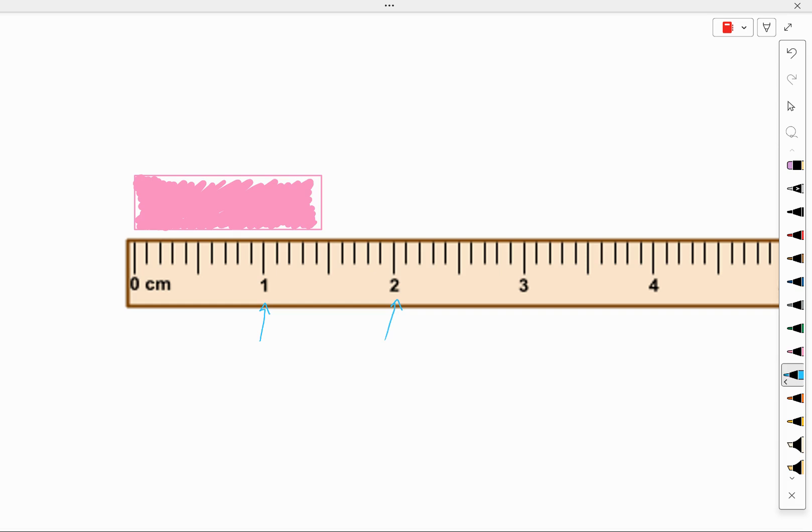Those smaller divisions, there are 10 equally spaced divisions. So you can call them tenths of a centimeter. Or those are also known as millimeters. And so again, those smaller lines are measuring in millimeters and the larger lines in centimeters.